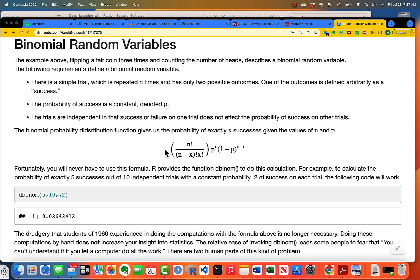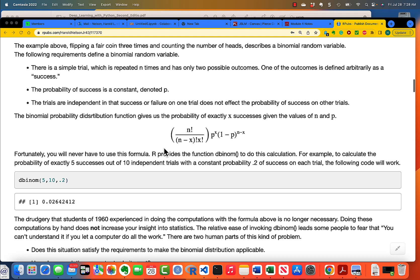So, here we have a famous formula. The binomial probability distribution gives us the probability of exactly X successes given the values of N and P. And this is an example of a D function. So, if you're looking for the probability of X successes out of N trials with probability of P of success on one trial, then this will give you the probability that you're looking for.